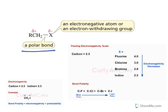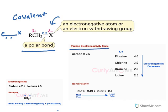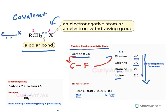First, let us understand what is meant by a polar bond. A covalent bond is formed by sharing electrons — carbon gives one electron and a halogen gives one electron, both shared together to form a bond. Now, where do these electrons stay — with carbon or with halogen? This is determined by electronegativity. According to the Pauling scale, the most electronegative atom is fluorine with a value of 4, followed by chlorine, bromine, and iodine going down the group. Carbon's electronegativity is 2.5.